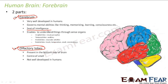Cerebrum enables us to understand things through sense organs. The cerebrum itself is divided into different lobes, each with a specific function. For example, it has the occipital lobe which is for visual perception — whatever we see, our eyes just see the object, but it is our brain that interprets it. For example, we see a tiger and know it is not a cat. This visual perception is handled by the occipital lobe, shown here as the green colored region.